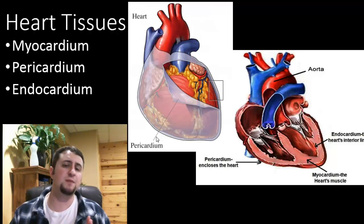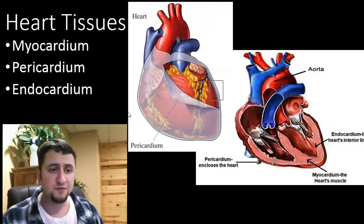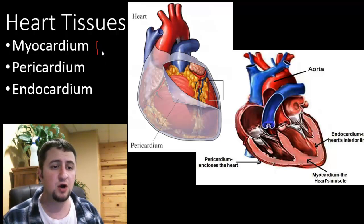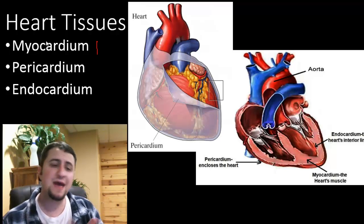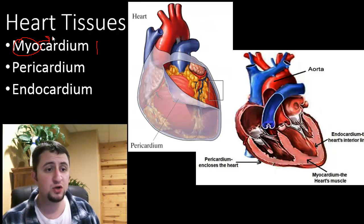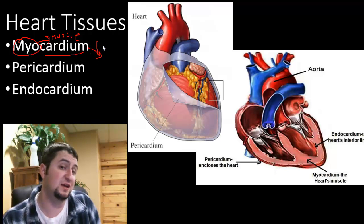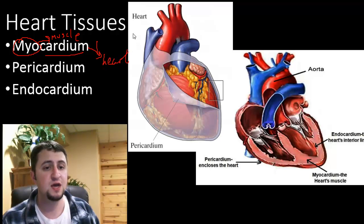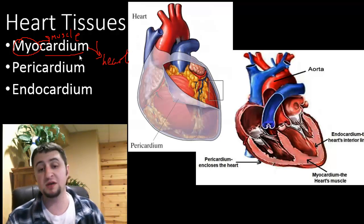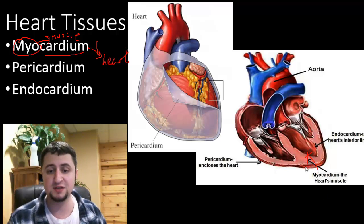We are going to talk about three major types of heart tissues. The first kind is the myocardium. As I often say with science, it's very important to use your root words. Myo is a Latin word which means muscle. And cardium sounds like cardiac — it is a root word that means heart. So myocardium: muscle, heart. The myocardium is the heart muscle itself.